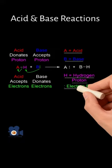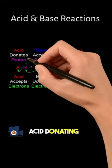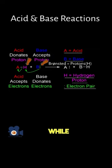In it, you can see the acid donating its proton while the base accepts it in the Bronsted-Lowry definition, while simultaneously the acid accepts electrons from the base's donation of them.